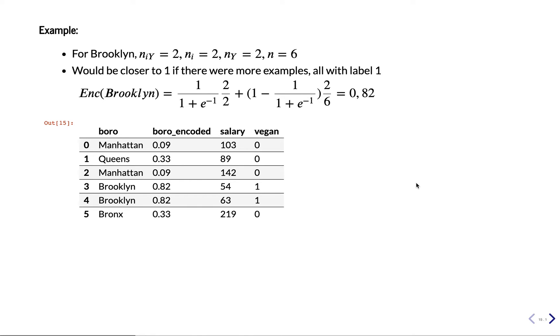So to illustrate, imagine our data here. We have some feature Brooklyn. Brooklyn is always associated with a positive class, vegan. That means we assign a value close to one.